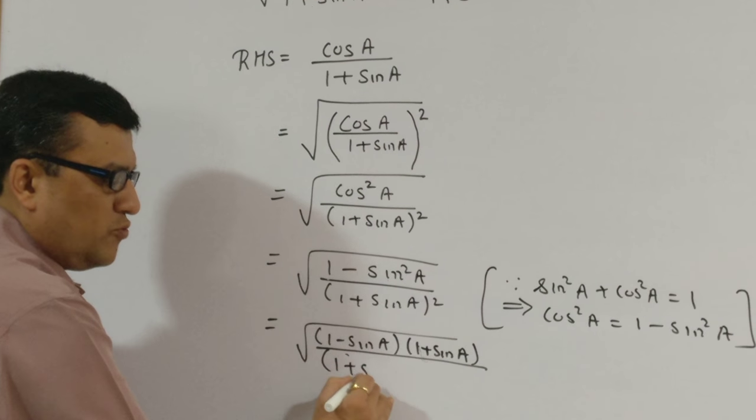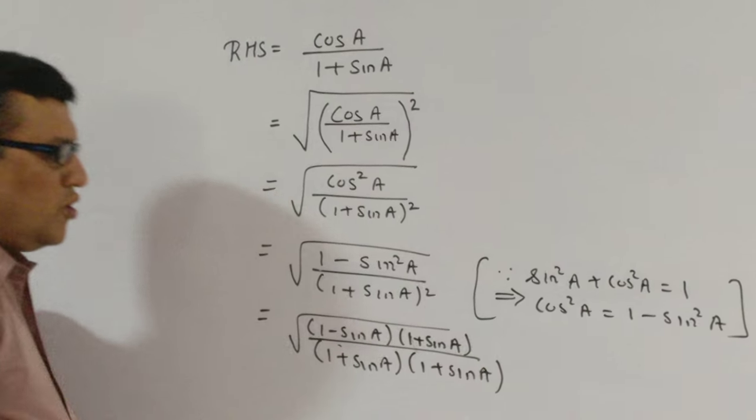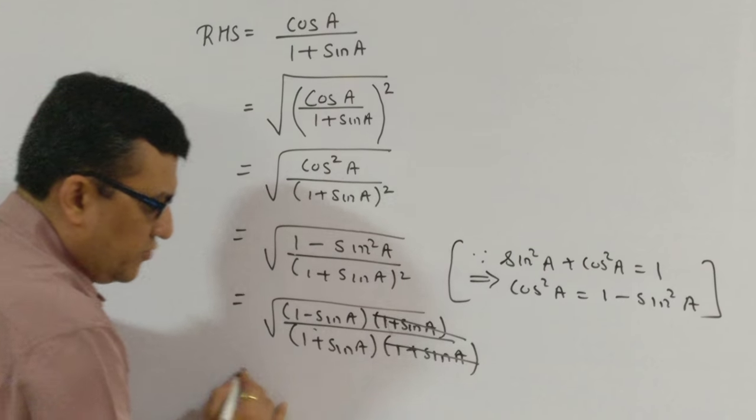In the denominator what we have is 1 plus sine A the whole square, which can always be written as 1 plus sine A into 1 plus sine A. Now 1 plus sine A gets canceled off. What I'm left with is 1 minus sine A upon 1 minus sine A.